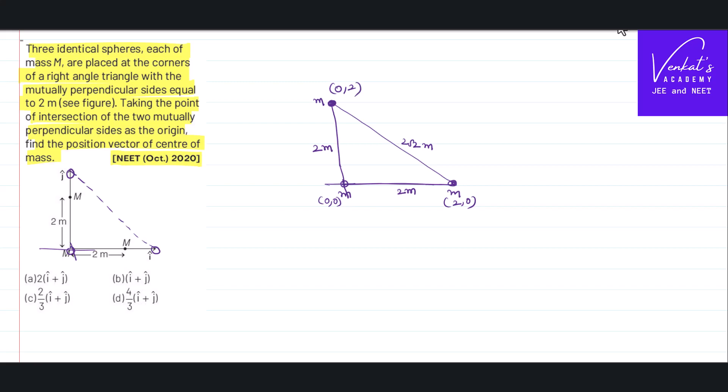So I know the masses, I know the locations. So I can write x_cm, center of mass of the system, as m1·x1 plus m2·x2 plus m3·x3.